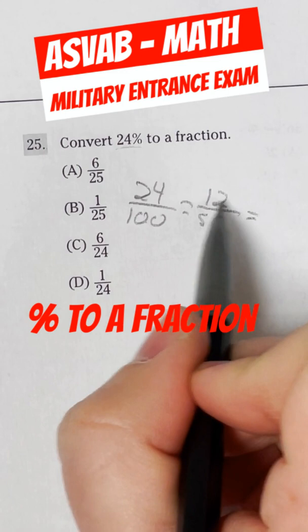Cut those both in half, 12 in half is 6, and 50 in half is 25. That means that our final answer, because these can't be cut down anymore, it's going to be 6 over 25, which is option A.